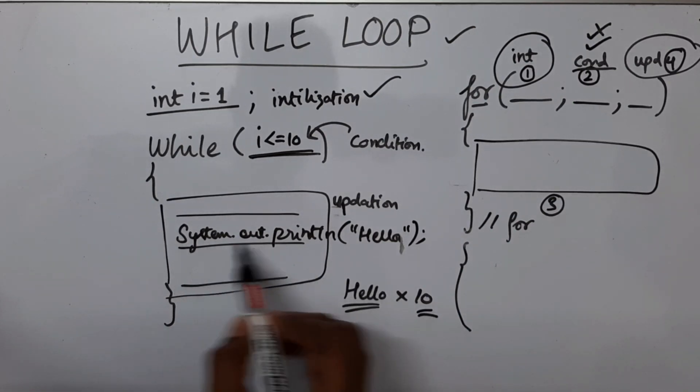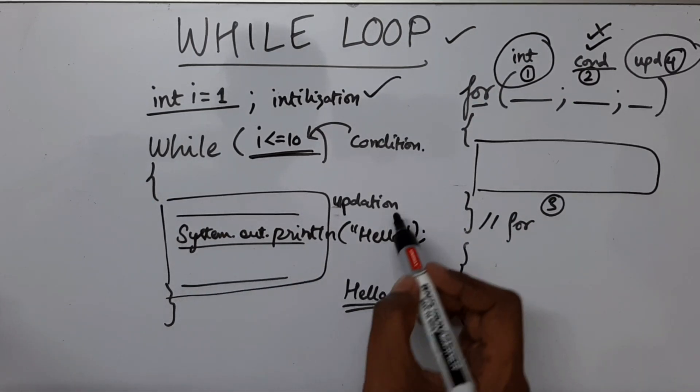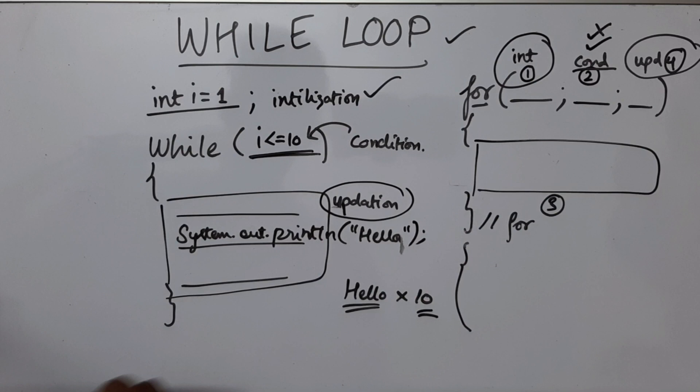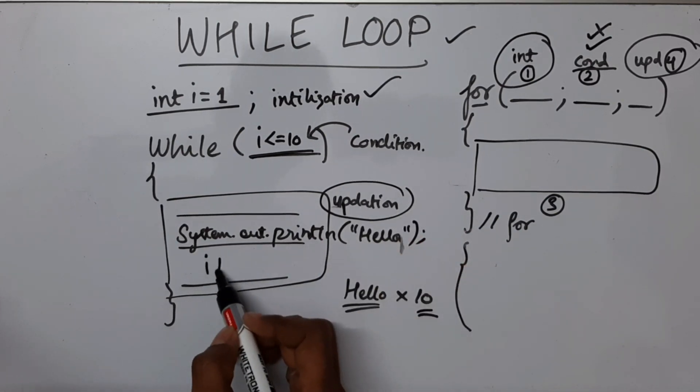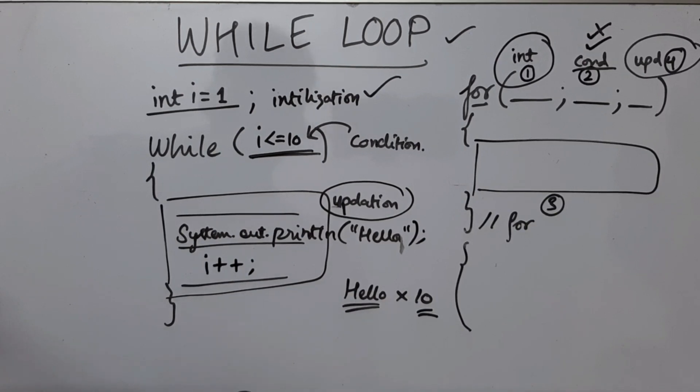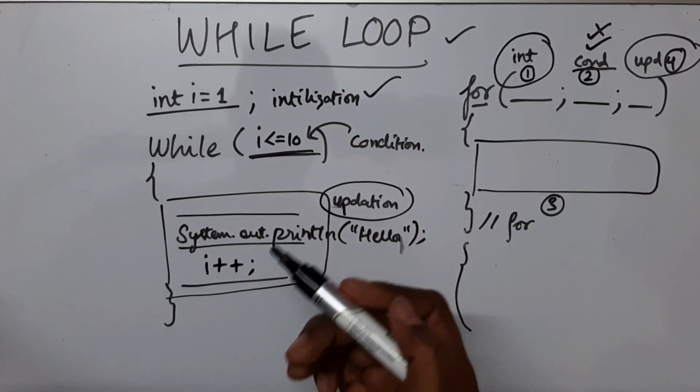So I'm going to print hello here, and then we need to do an updation. So what is the updation we need? We need i++. Okay, so now let's execute the code.